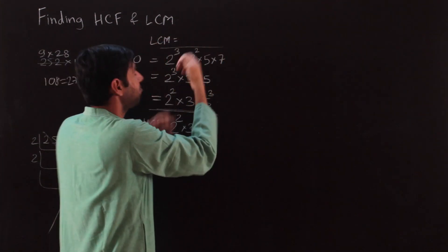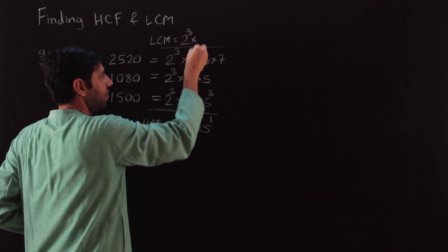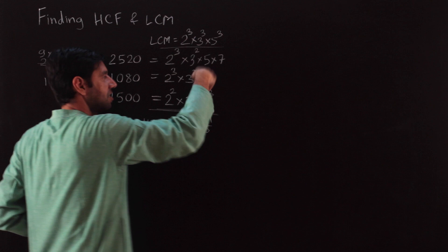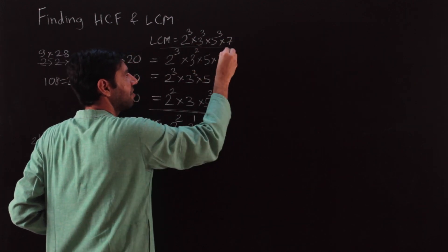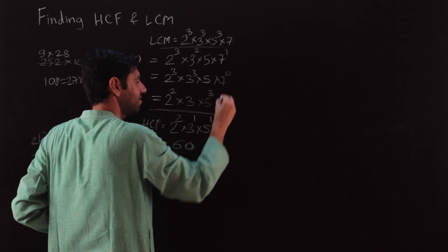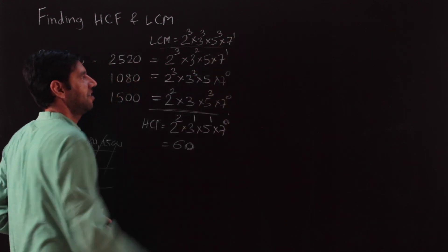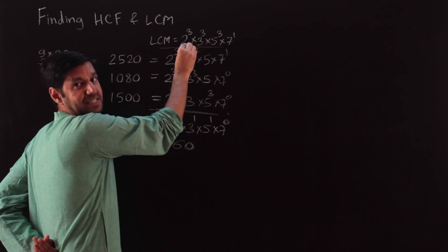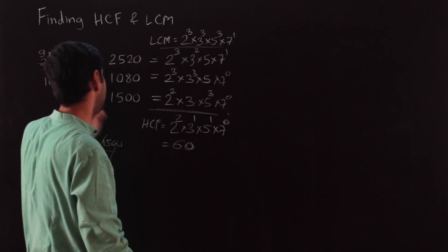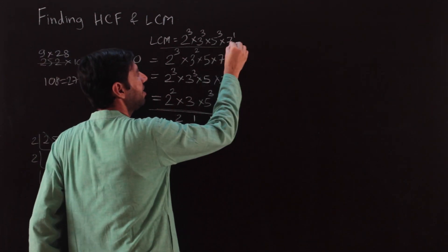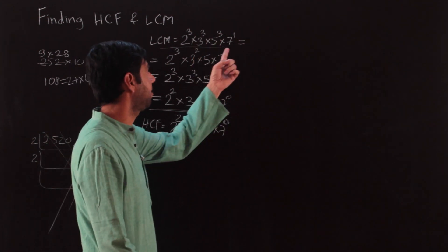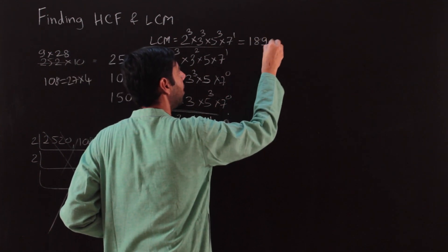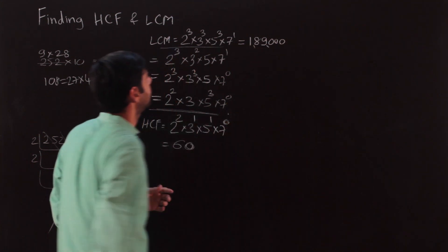For the LCM, take the largest power of each prime. Largest power of 2 is 2³, largest power of 3 is 3³, largest power of 5 is 5³, and 7¹ must be included. So LCM = 2³ × 3³ × 5³ × 7. Calculate: 5³=125, 125×8=1000; 3³=27, 27×7=189; 1000×189 = 189,000. That is the LCM.